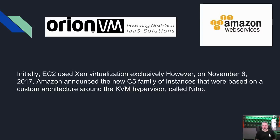The Xen hypervisor is the hypervisor itself, but the spin we're speaking of today is XCP-ng, and I'll also talk a bit about Citrix — both are packaged, feature-complete versions of the Xen project wrapped into an easier-to-use product. A couple of notable companies still using Xen server include Orion VM and Amazon. EC2 used Xen virtualization exclusively; however, on November 6, 2017, Amazon announced a new C5 family of instances based on a custom KVM-based architecture called Nitro. Only the C5 family moved away, which is not the largest part of EC2 — so Xen is still pretty huge.